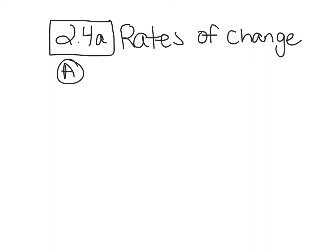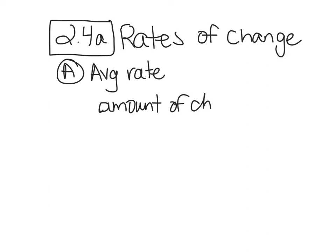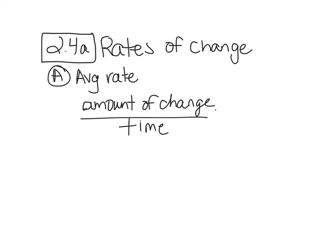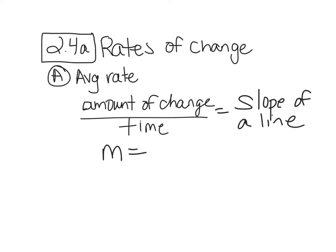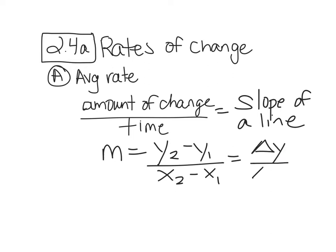We'll have a couple parts today. First, we're going to find the average rate of change, which you've done many times before. The average rate of change is the amount of change over time, and we know this as the slope of a line. You take a y-value minus another y-value over the corresponding x-values — it's always the change in y over the change in x.